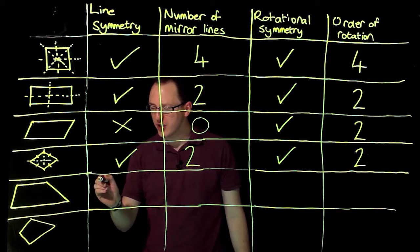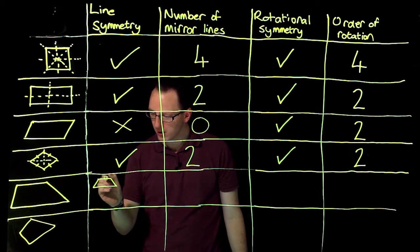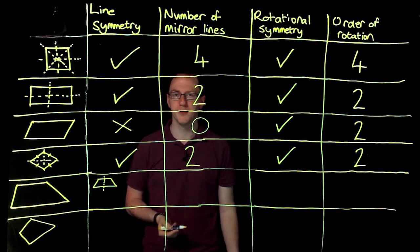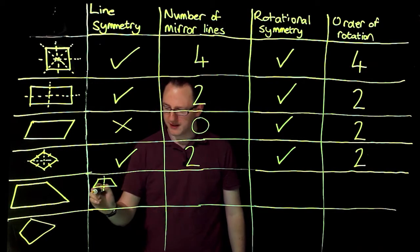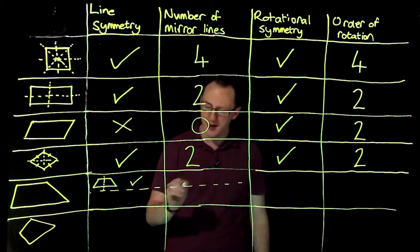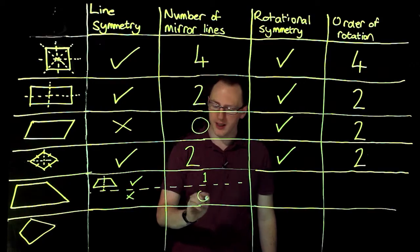if I was to have an isosceles line trapezium, it would have one line of symmetry. Okay, so I'm going to say, for isosceles, I split this up here. For isosceles, yes, it's got one. Otherwise, no, it's got zero.